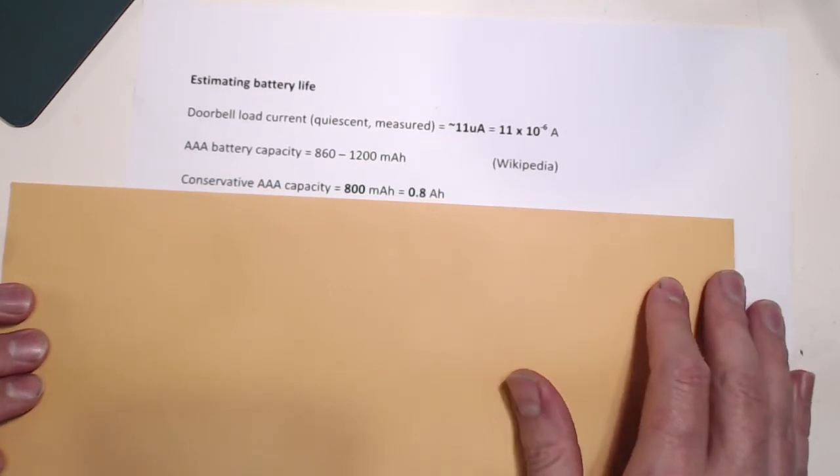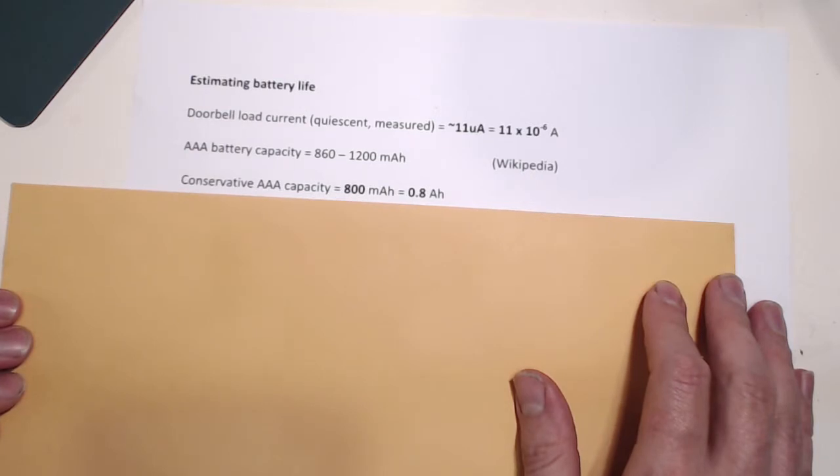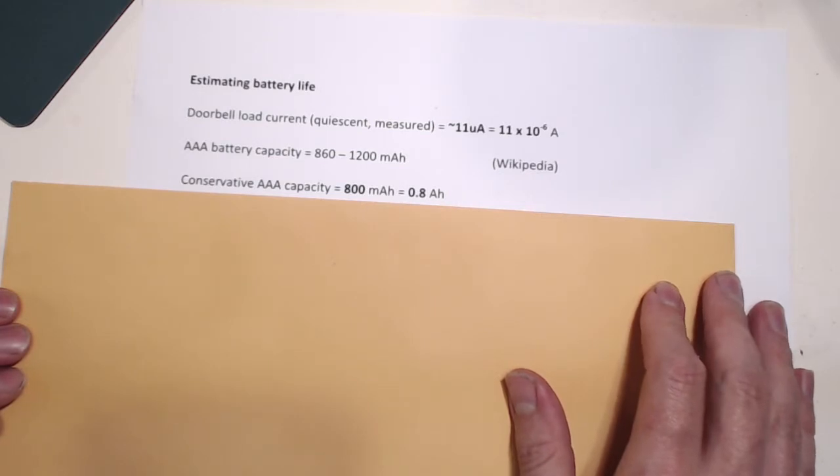So, given that figure, what if we estimate that our AAA batteries have a capacity of about 800 milliamp hours, so that's below the range Wikipedia specifies. It's always safe to design things conservatively. That equates to 0.8 amp hours.